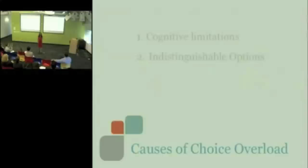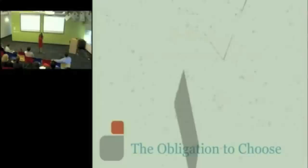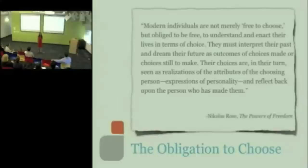Which brings me to the third cause of choice overload, which is that today choosing has become a high stakes exercise. We have so much pressure put upon us to know what we want, to express what we want, and to make choices that are in line with what we say we want. As Nicholas Rose wrote in his book, The Powers of Freedom, modern individuals are not merely free to choose, but obliged to be free to understand and enact their lives in terms of choice. They must interpret their past and dream their futures as outcomes of choices made and choices still to be made. Their choices are in their turn, realizations of the attributes of the choosing person, expressions of personality that reflect back on those who have made them.